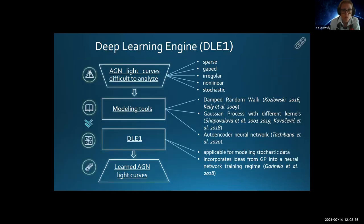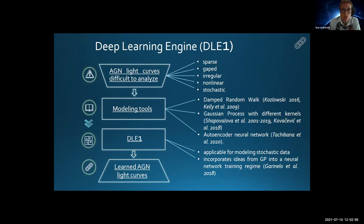I will now introduce you to the Deep Learning Engine 1, in which we attempted to build and determine the applicability of neural network on active galactic nuclei light curve modeling. AGN light curves are sparse, gapped, and irregular with random flares, non-linear, and stochastic structure. All of these features make them extremely difficult to model and analyze. In order to determine underlying properties of light curve source, such as time lags or possible periodicities, which could imply binary systems, we have attempted to model available data as a means to pre-process it and prepare it for further analysis.